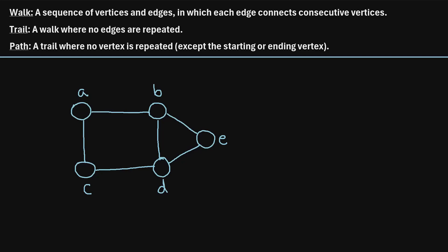In this video, I will explain the difference between a walk, a trail, and a path as it relates to graphs. A walk is a sequence of vertices and edges in which each edge connects consecutive vertices. If we take a look at this graph that I've created down here, let's check out an example of a walk.